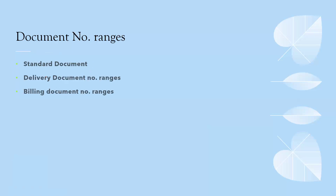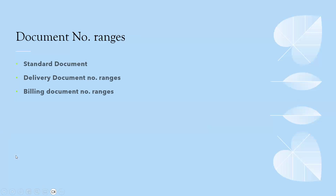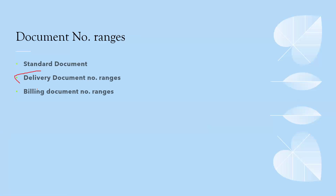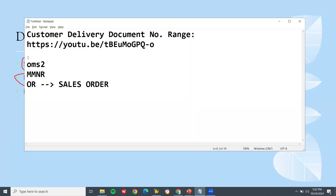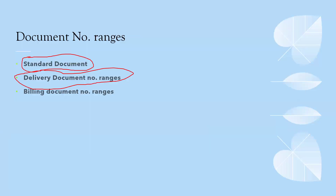Next is document number ranges. You have to create number ranges for the sales order document, delivery document, and billing document. The sales order document number range is maintained in transaction code VN01. Links have been provided in the description for delivery document number ranges — check the links. This is also part of the implementation, and you have to create a number range for the sales order.